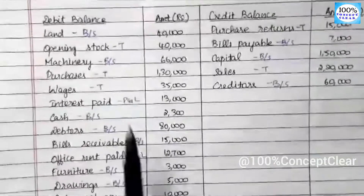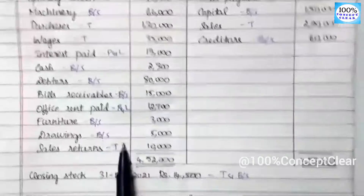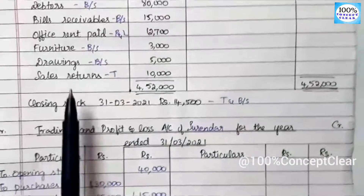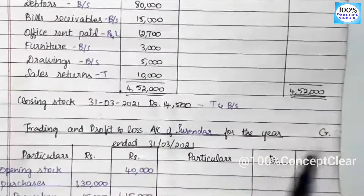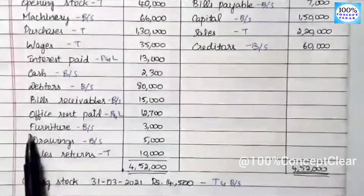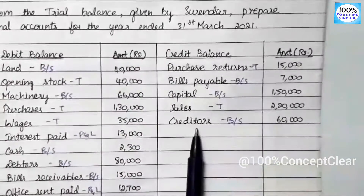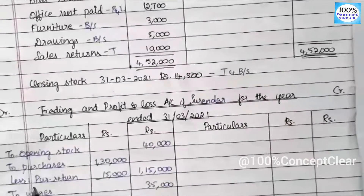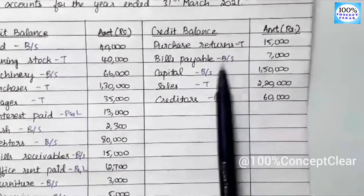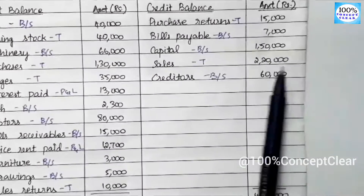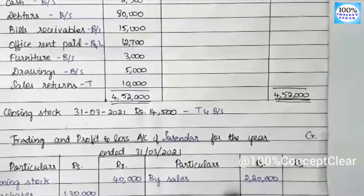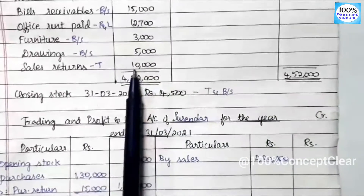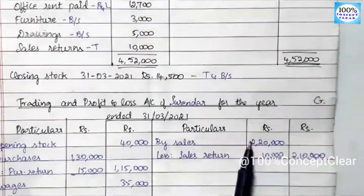Now we look at the credit side of the trading account. On the credit side, we have sales return — we will minus the sales return. So we have sales of $2,20,000. We note that. Next we have the sales return of $10,000, so sales return is minus.